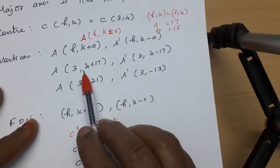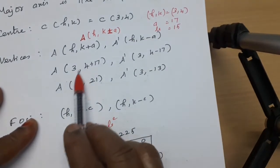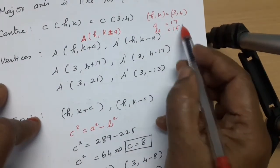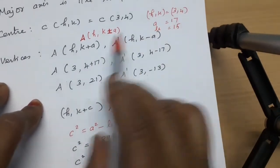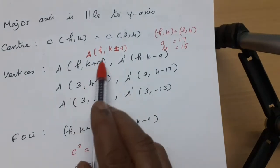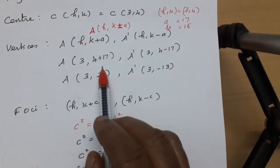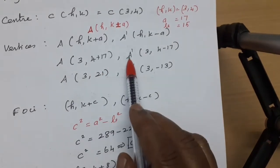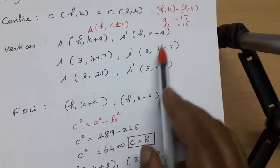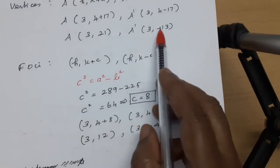Substituting: h equals 3, k equals 4, a equals 17. So the vertices are: A equals (3, 4+17) equals (3, 21), and A-dash equals (3, 4−17) equals (3, −13).